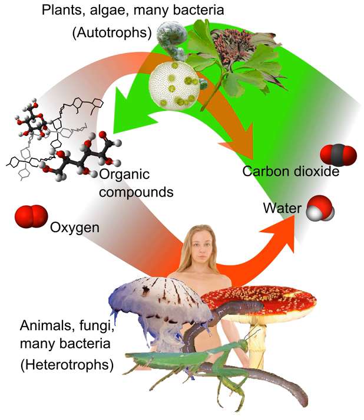Heterotrophs, by consuming reduced carbon compounds, are able to use all the energy they obtain from food for growth and reproduction, unlike autotrophs, which must use some of their energy for carbon fixation. Both heterotrophs and autotrophs alike are usually dependent on the metabolic activities of other organisms for nutrients other than carbon, including nitrogen, phosphorus, and sulfur, and can die from lack of food that supplies these nutrients.